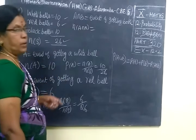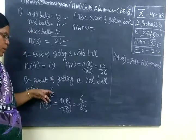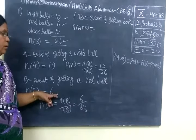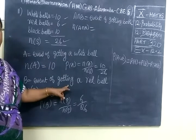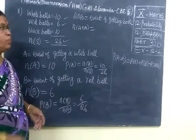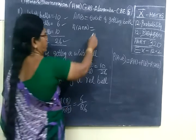Then event of getting both - that is, the ball selected should be white as well as red. But these are mutually exclusive events.